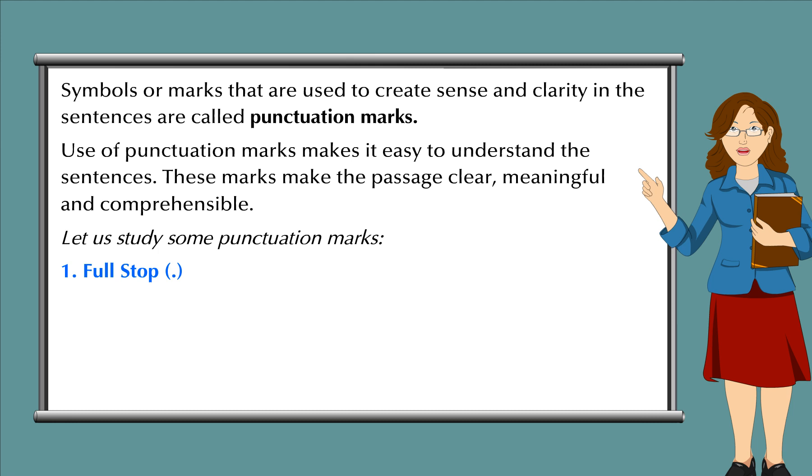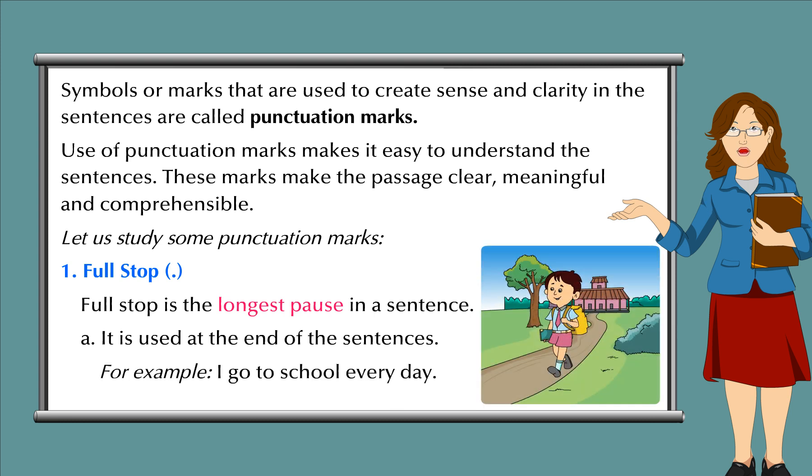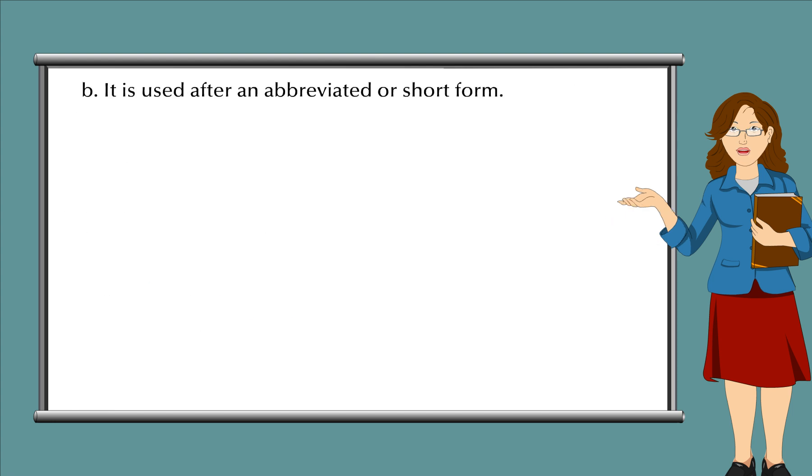1. Full Stop. Full stop is the longest pause in a sentence. A. It is used at the end of the sentences. For example, I go to school every day. B. It is used after an abbreviated or short form. For example, she will come back at 6 p.m.